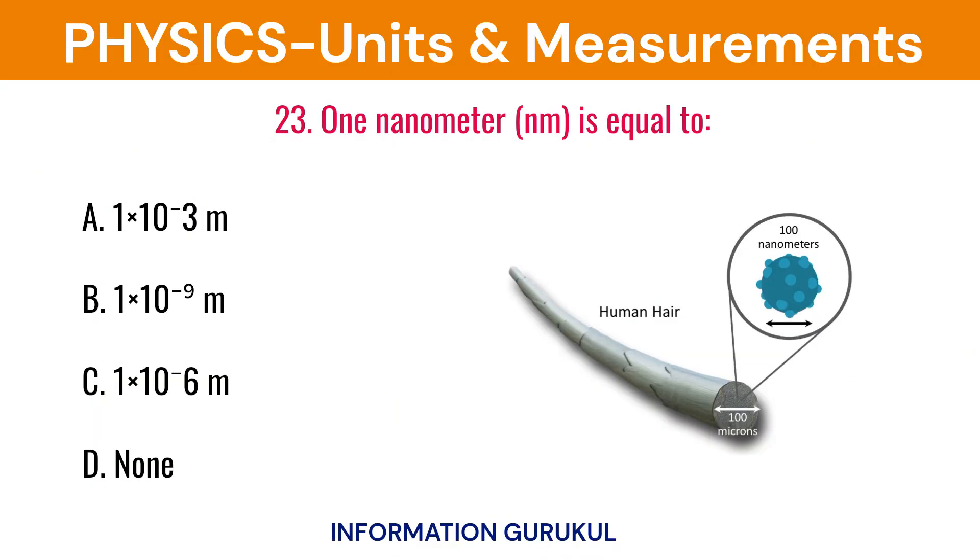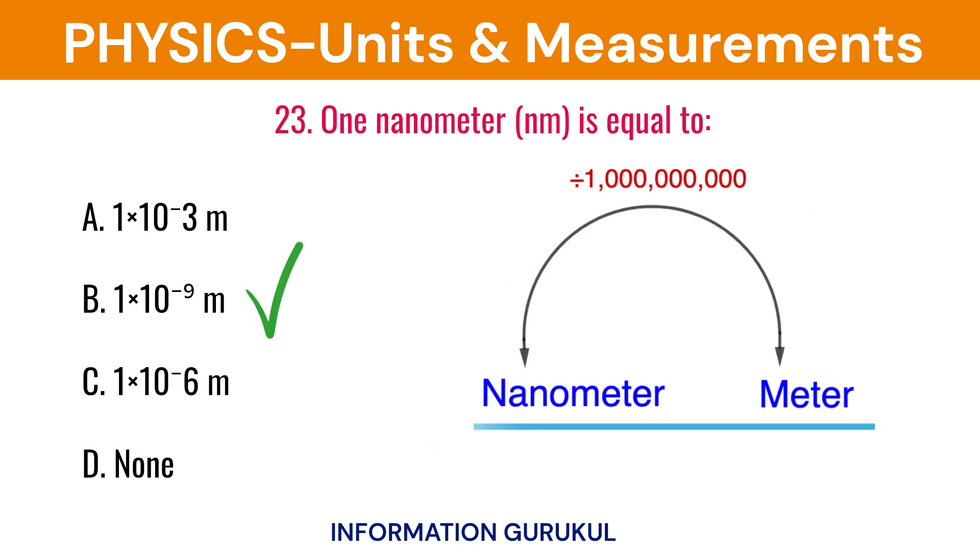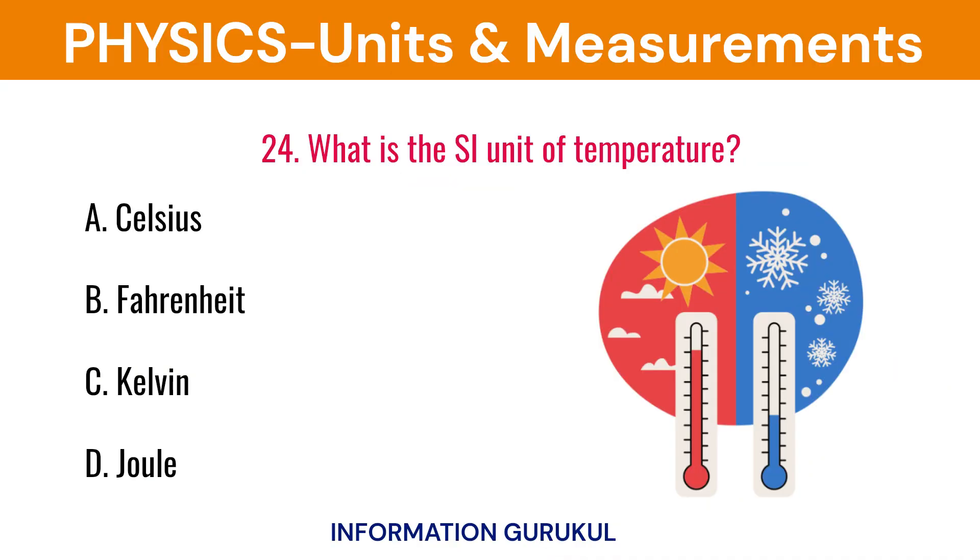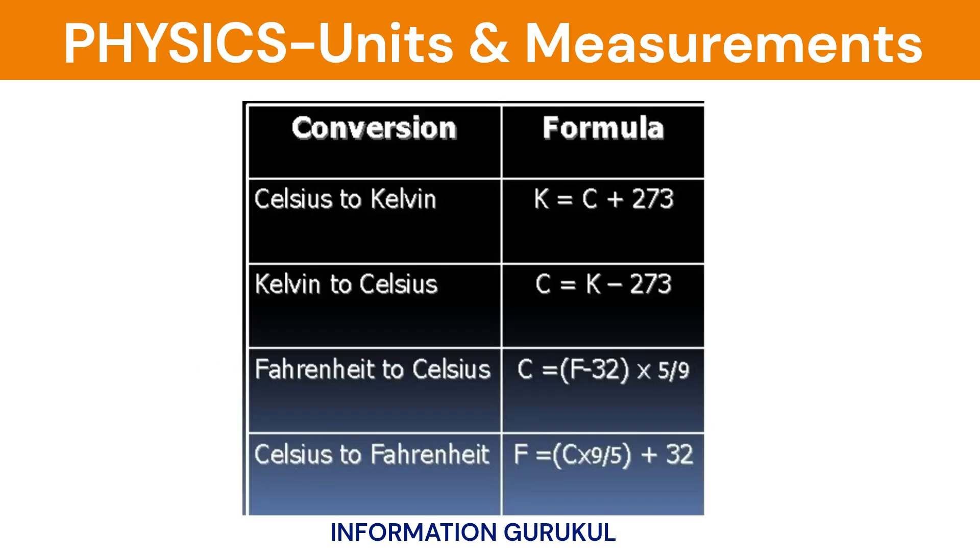One nanometer is equal to 10 to the power minus 9 meter. What is the SI unit of temperature? The SI unit of temperature is Kelvin. Pause the video and check the temperature conversion formulas.